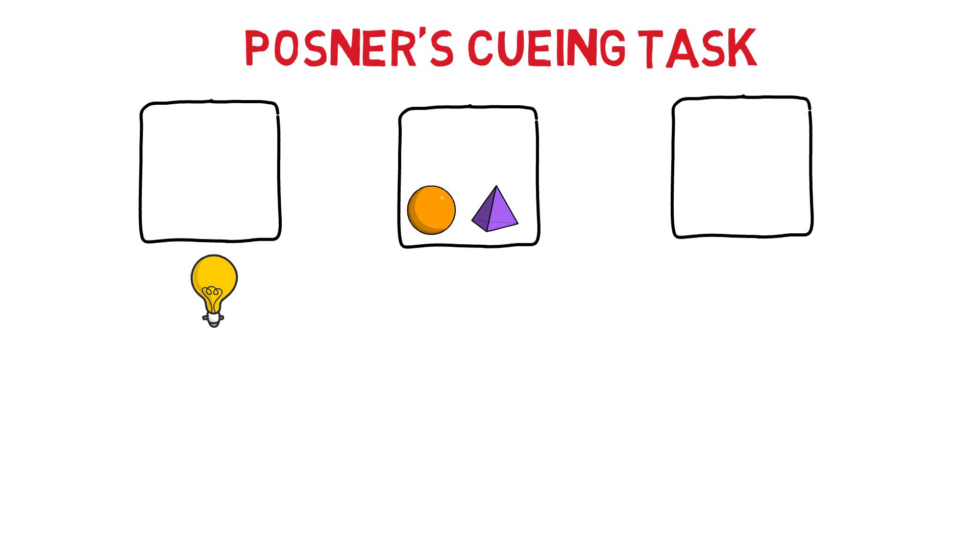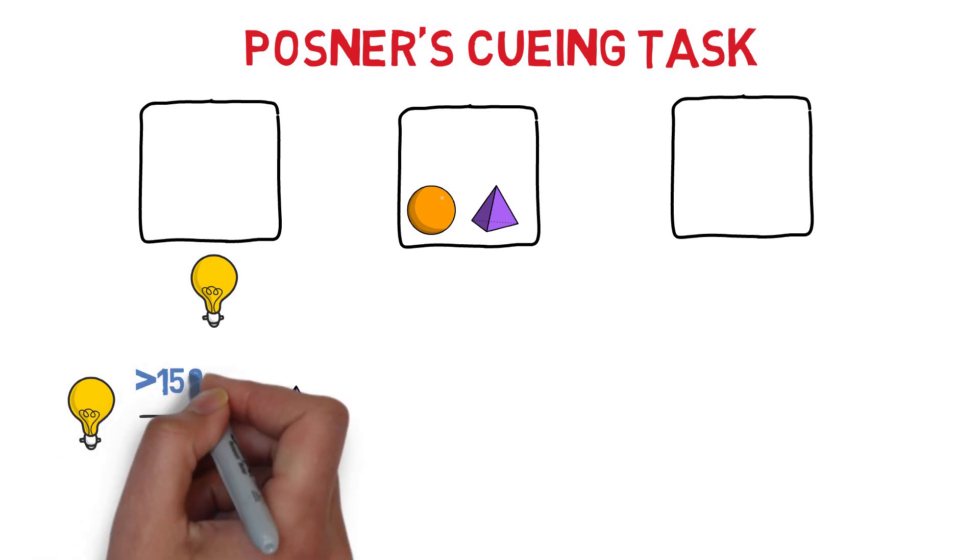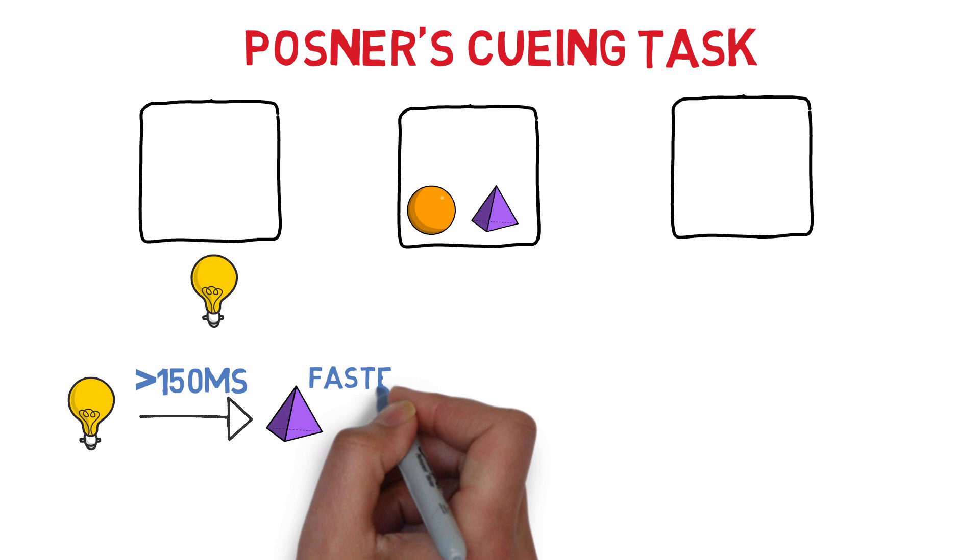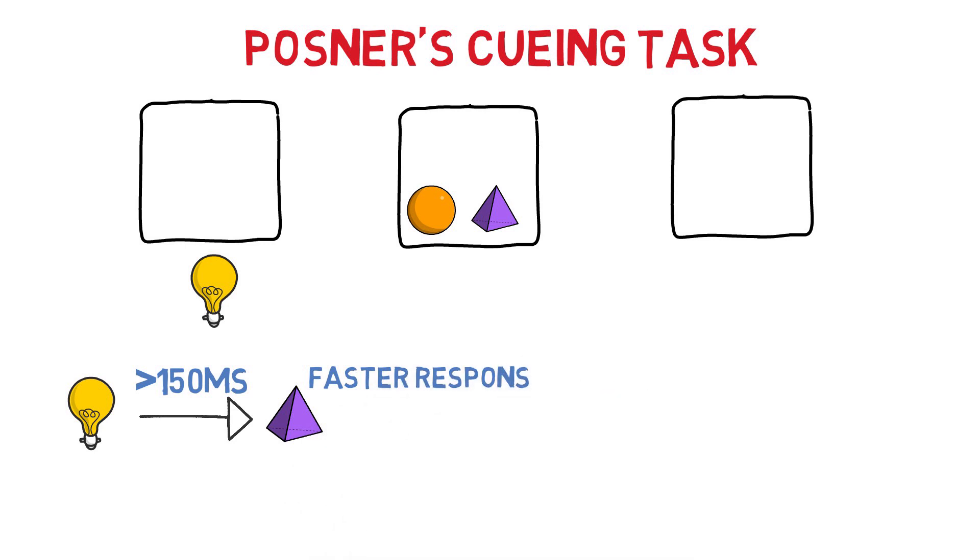So this is the study result. When the cue precedes the target by up to 150 milliseconds, the test subjects were significantly faster at detecting the target. But on the other hand, when the cue presented more than 300 milliseconds before the target, the test subjects were slower at detecting the target in the same location as the cue.